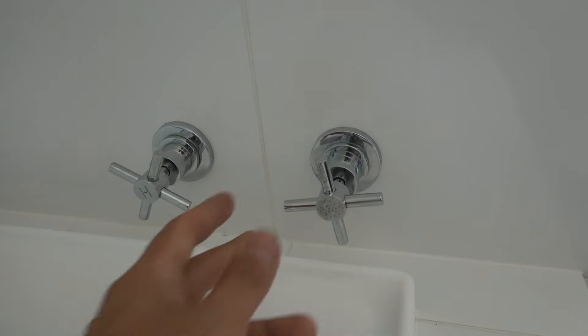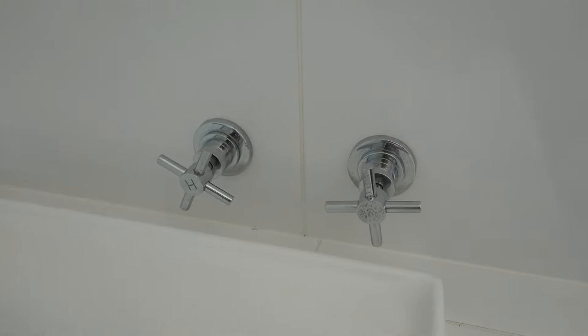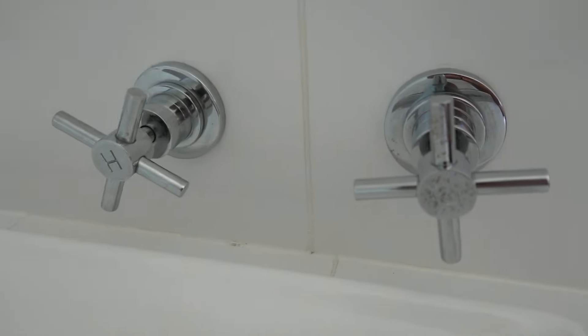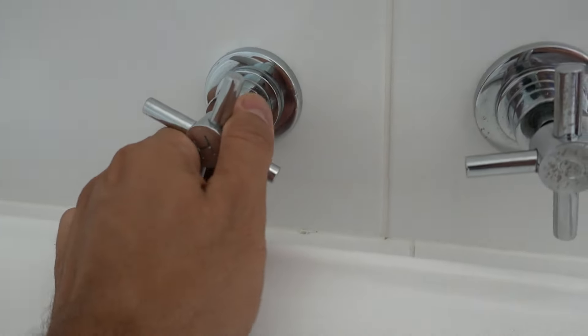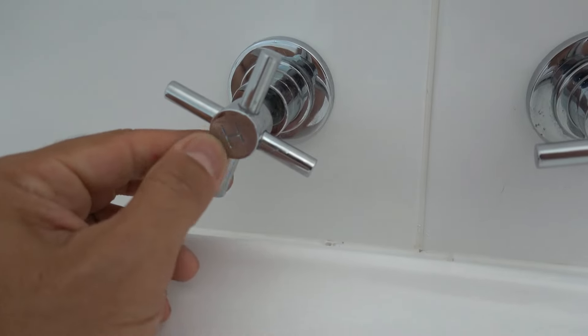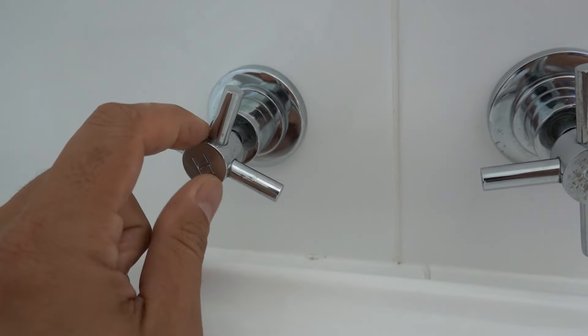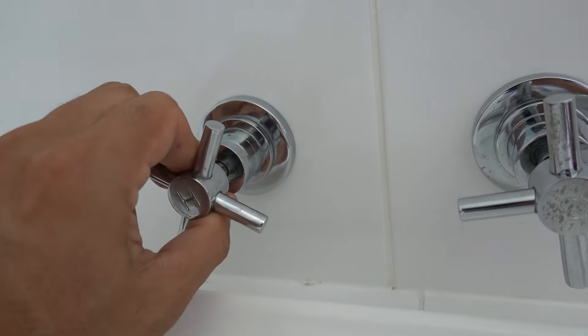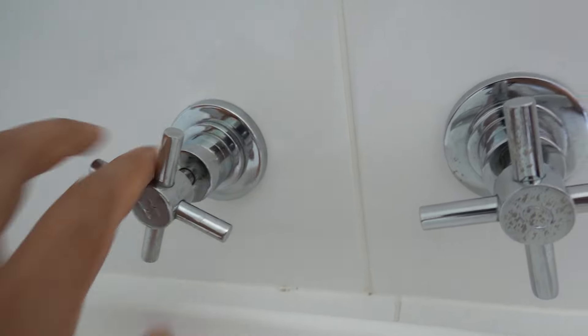Alright guys, so we need to remove these handles here to replace the washer on the spindle. You can see here the tap is dripping non-stop and there's no visible way of actually removing these handles. Nice and solid, you can see there's no outer cap, no screw location or allen key or anything visible that's actually holding this in place.